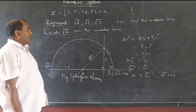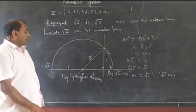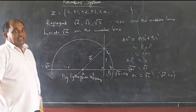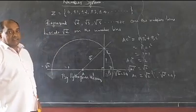In the same way, you can also represent square root of 3, square root of 5, and so on on the number line.